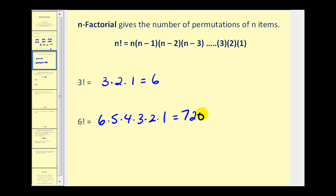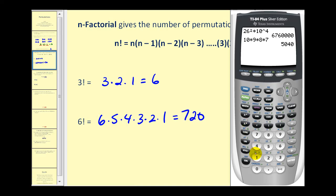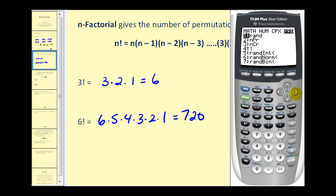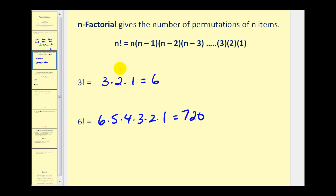Let's go ahead and show where the factorial button is on the calculator. If I wanted to determine twelve factorial, I could just type in twelve, press math, arrow over to probability, and it's option four. And remember that N factorial does represent the number of ways we can permute or order N distinct items — distinct meaning we can tell them apart.